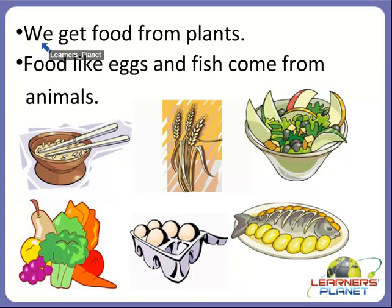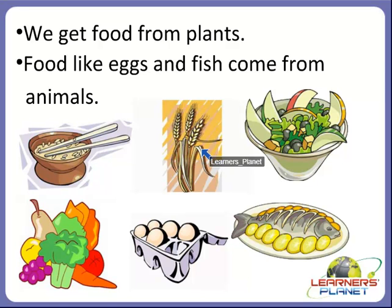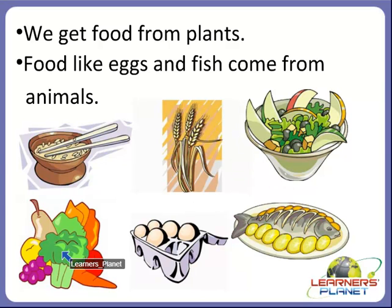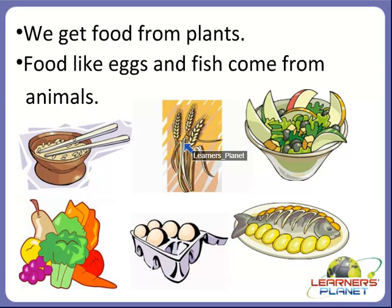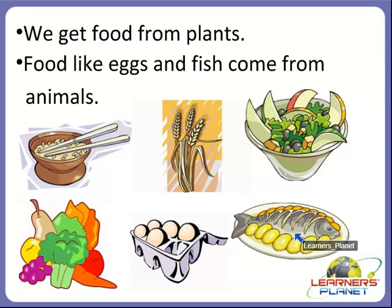We get food from plants. For example, rice, wheat, fruits and vegetables — these all come from plants. But food like eggs and fish come from animals. So remember that some foods are obtained from plants and some come from animals.